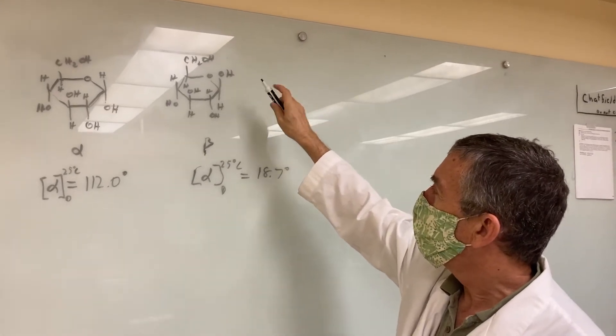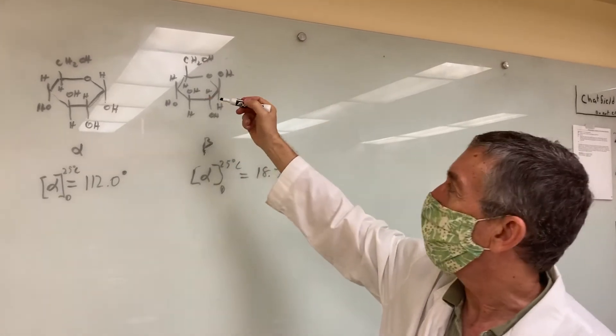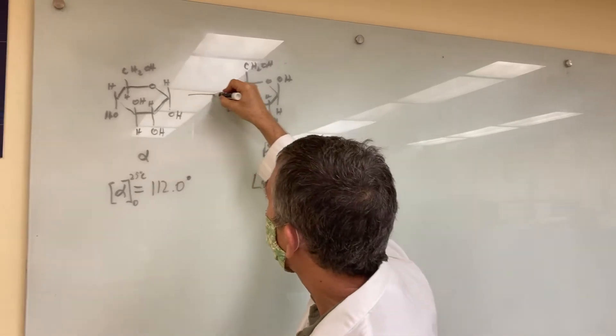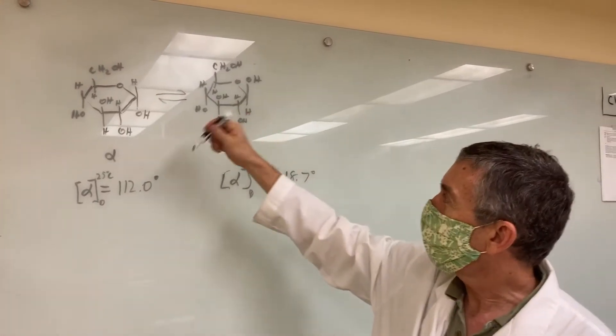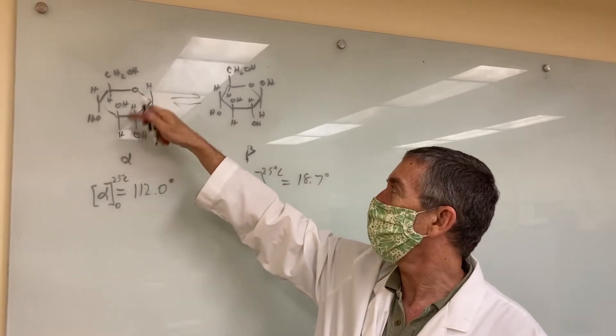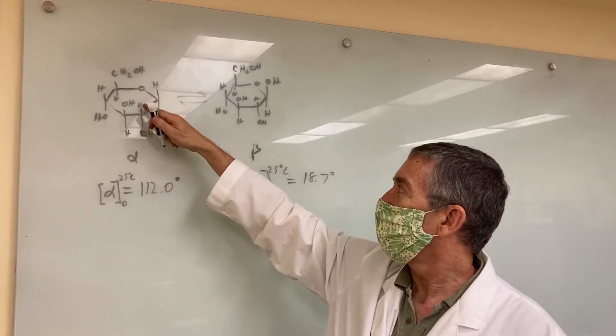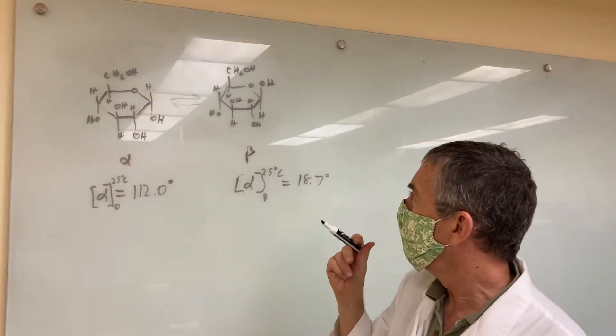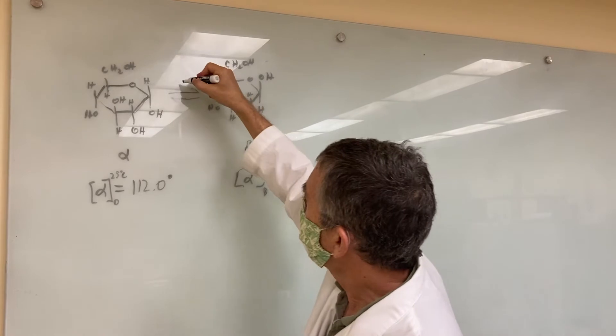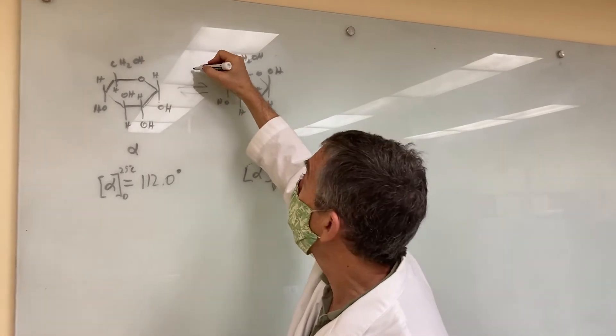So the two forms can equilibrate. You can react in either direction. Basically, this oxygen gets protonated and the ring gets cleaved and then this group can rotate. That's what happens. So our question is, what's the kinetics of this mutant rotation?